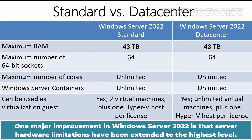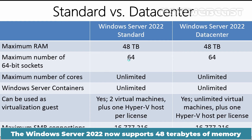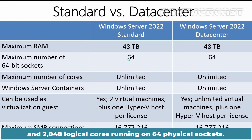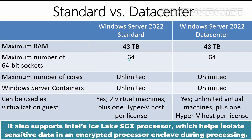One major improvement in Windows Server 2022 is that server hardware limitations have been extended to the highest level. Windows Server 2022 now supports 48TB of memory and 2048 logical cores running on 64 physical sockets. It also supports Intel's Ice Lake SGX processor, which helps isolate sensitive data in an encrypted processor enclave during processing.